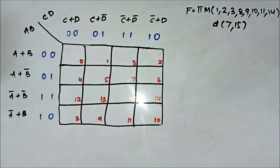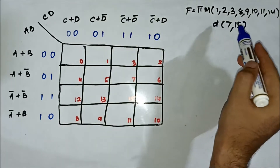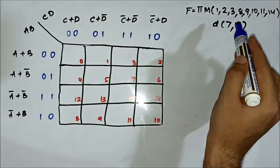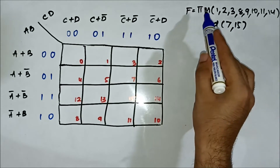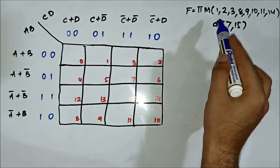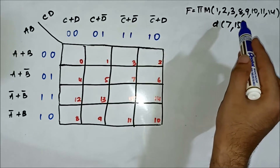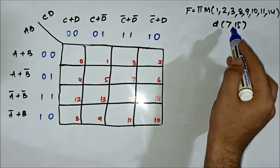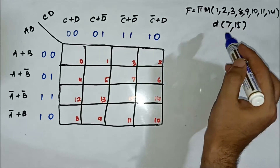Here we have another question related to 4-variable POS K-map with the don't care condition. We have the boolean expression given in terms of the max term values and the don't care values. The max term values are 1, 2, 3, 8, 9, 10, 11, 14 and the don't care values are 7 and 15.